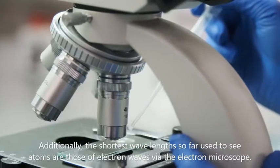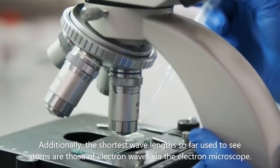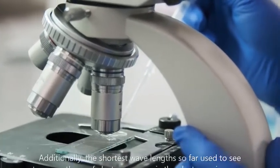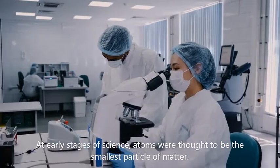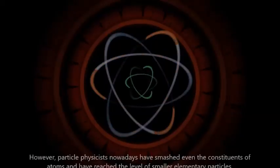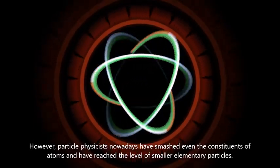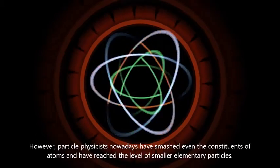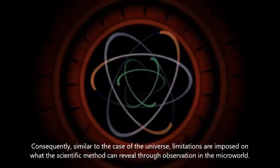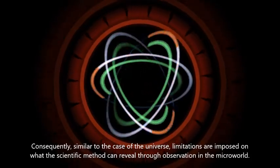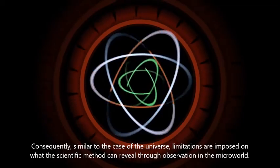Additionally, the shortest wave lengths so far used to see atoms are those of electron waves via the electron microscope. At early stages of science, atoms were thought to be the smallest particle of matter. However, particle physicists nowadays have smashed even the constituents of atoms and have reached the level of smaller elementary particles. Consequently, similar to the case of the universe, limitations are imposed on what the scientific method can reveal through observation in the microworld.